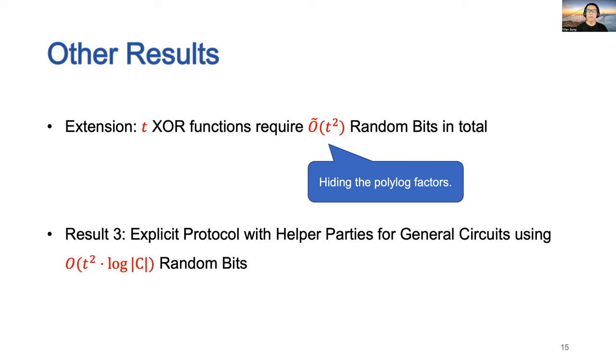When allowing helper parties, we give an explicit protocol for general circuits with O(t² · log|C|) random bits, where C is the circuit size.